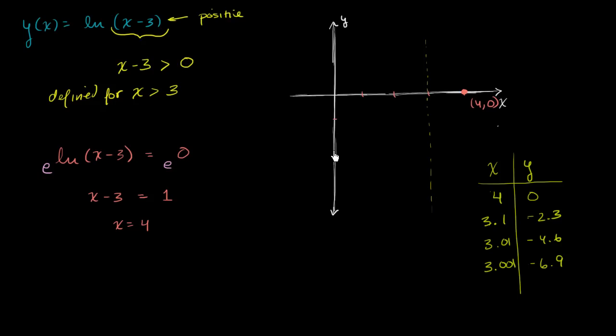So this is negative 1. This is negative 2. This is negative 3. This is negative 4. So when x is equal to 3.1, which is right about there, we're at negative 2.3, which is right around there. When x is 3.01, which is really hard to see right over here, we get to negative 4.6, which is way down here.